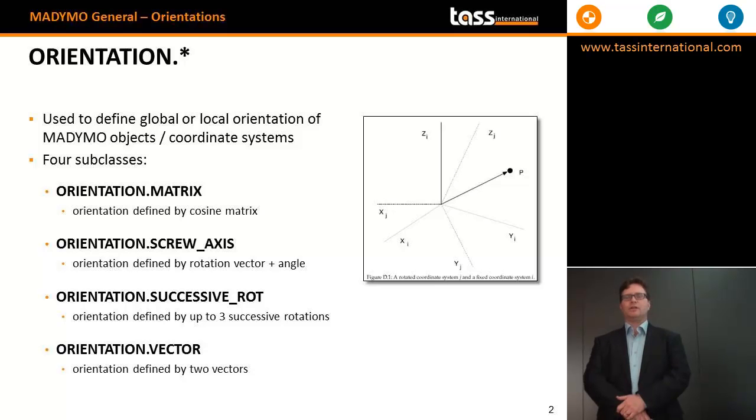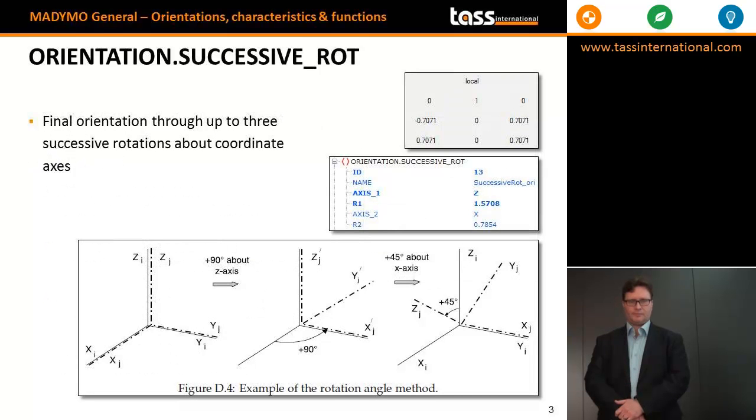For this video, we will only go into some detail on the successive rotations. The orientation.successive_rot provides the user the opportunity to specify subsequent axes along which a rotation is specified. For example, here in the slide, you see that first a rotation of 90 degrees along the z-axis is prescribed as axis 1.